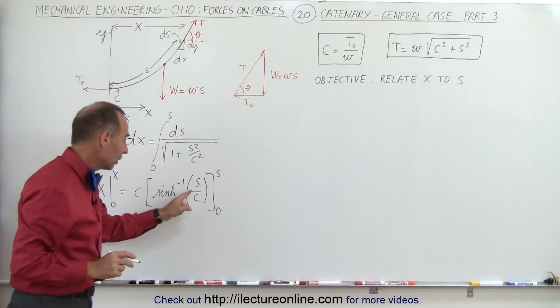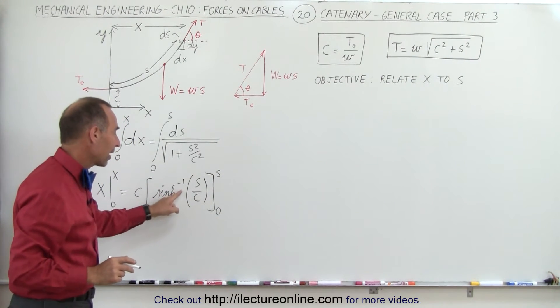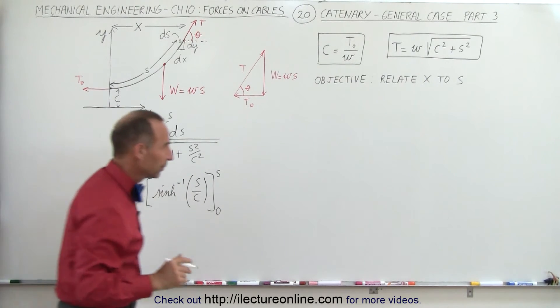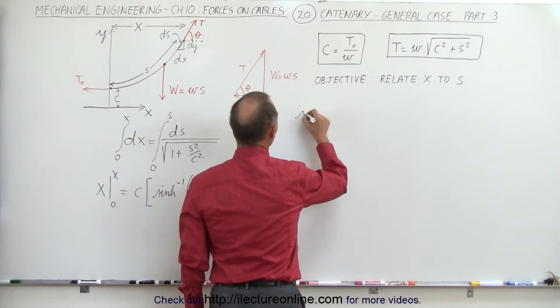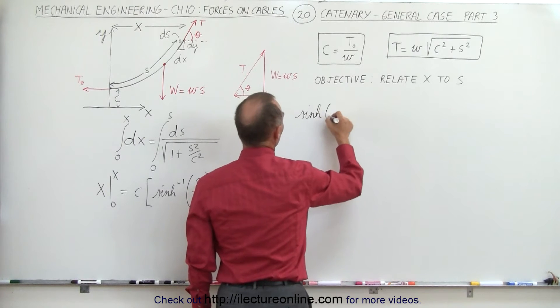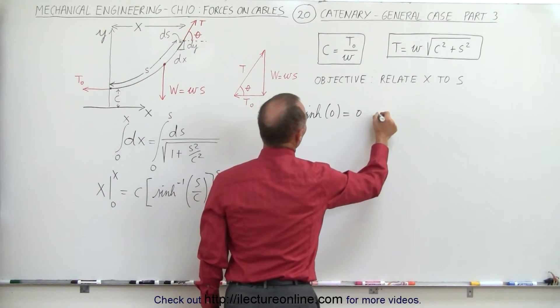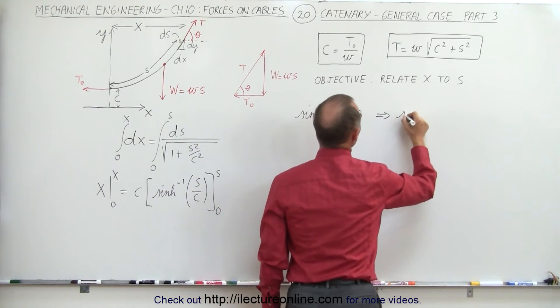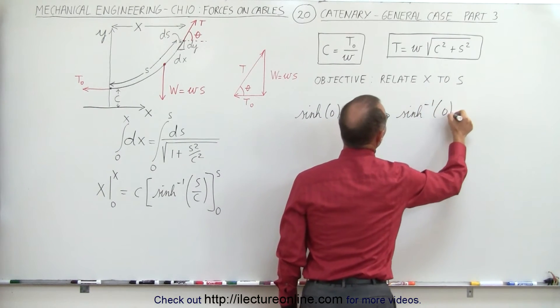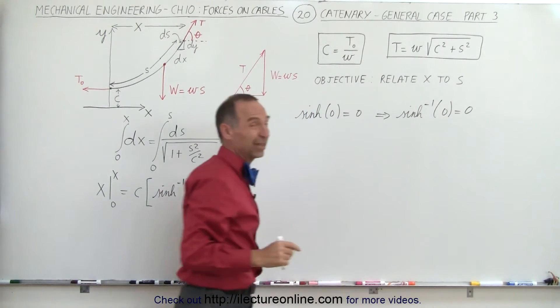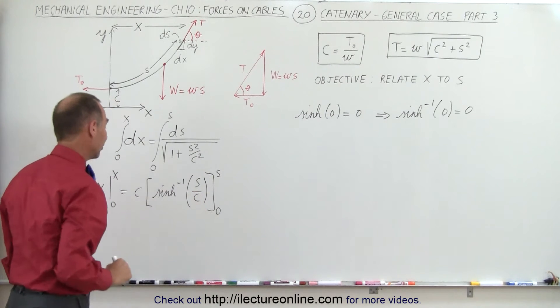Now when we plug in the lower limit we get the inverse hyperbolic sine of 0. What is that equal to? Well it turns out that the hyperbolic sine of 0 is equal to 0, which means that the inverse hyperbolic sine of 0 is also equal to 0. Therefore when we plug in the lower limit we'll get 0.